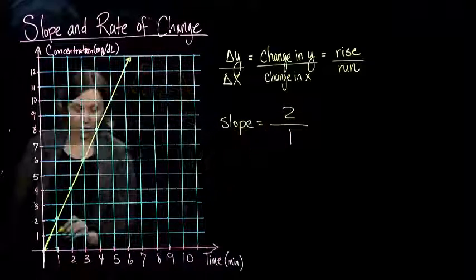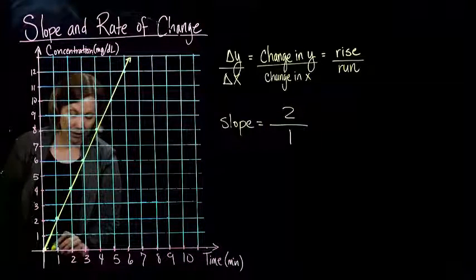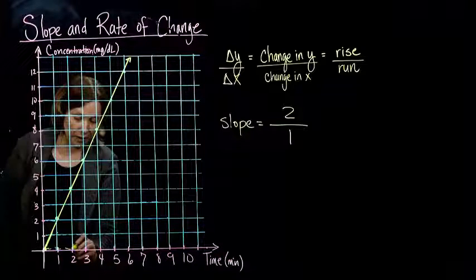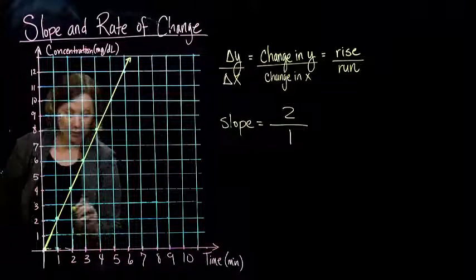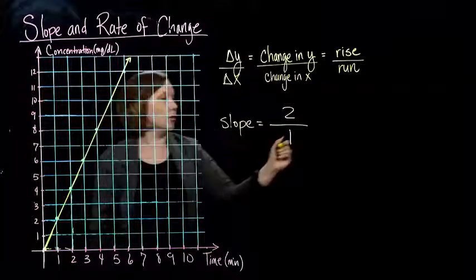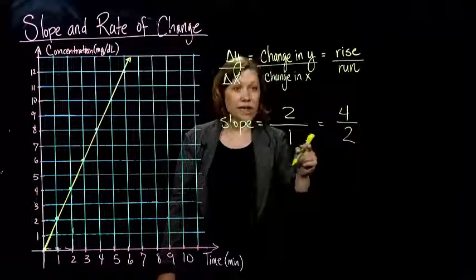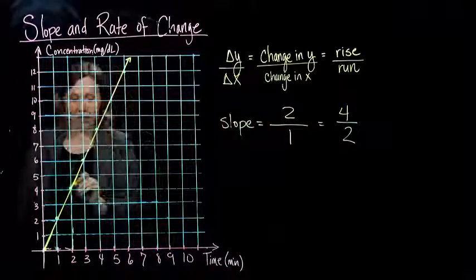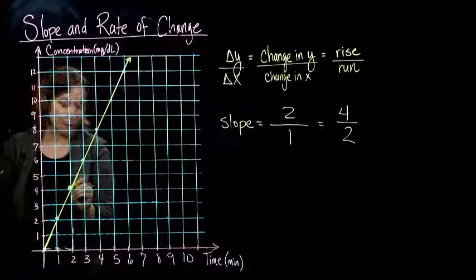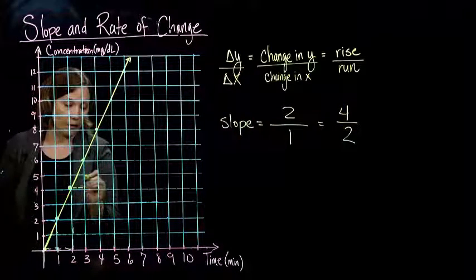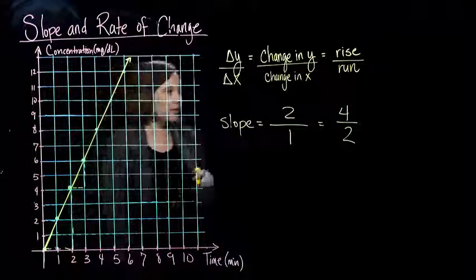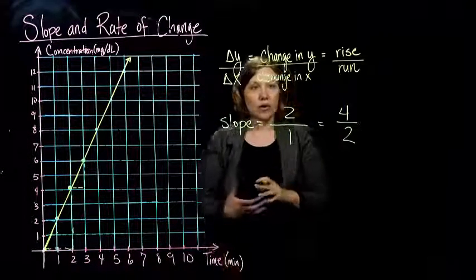And you could go from any point on the graph. So if I went over 2, I would go up 4. Right? We get the same. If we chose a different point on the graph to start, it wouldn't matter. And I went over 1. To get to the next point on the graph, I would go up 2.